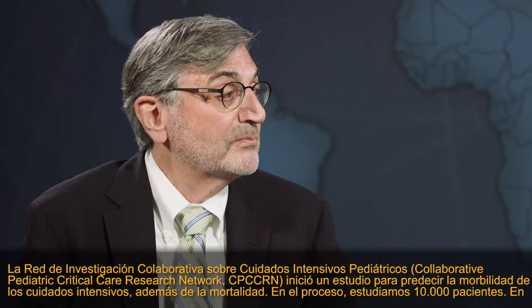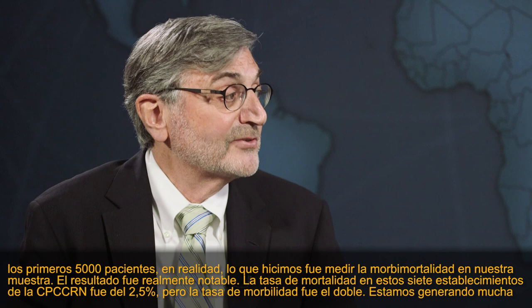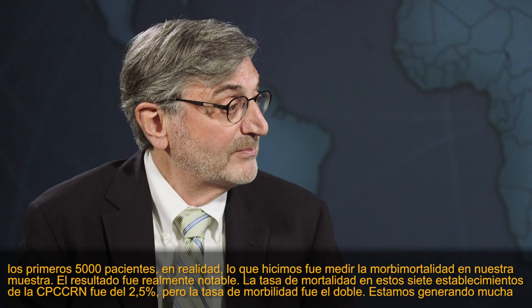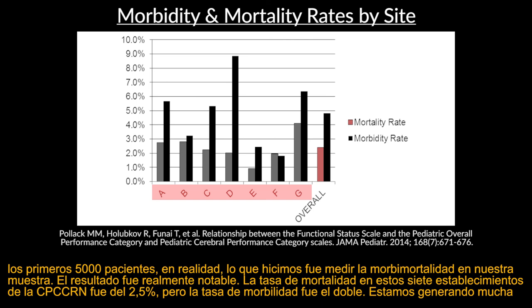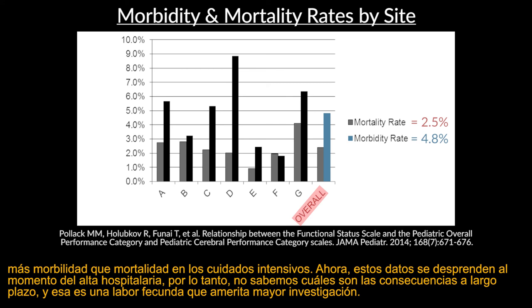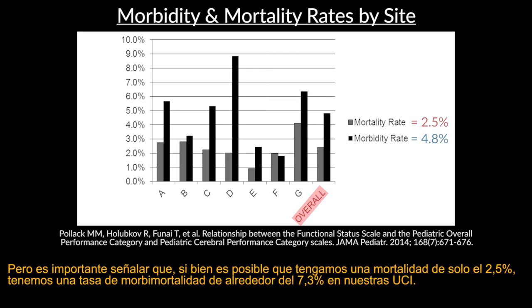The CAPCORN network undertook a study to predict morbidity from critical care as well as mortality, studying 10,000 patients. From the first 5,000 patients, we went back and measured morbidity and mortality in our sample. The results were remarkable: the mortality rate in these seven institutions was 2.5%, but the morbidity rate was twice as high. We are creating many more morbidities than mortalities in critical care. On hospital discharge, the combined mortality and morbidity rate was about 7-plus percent in our ICUs.